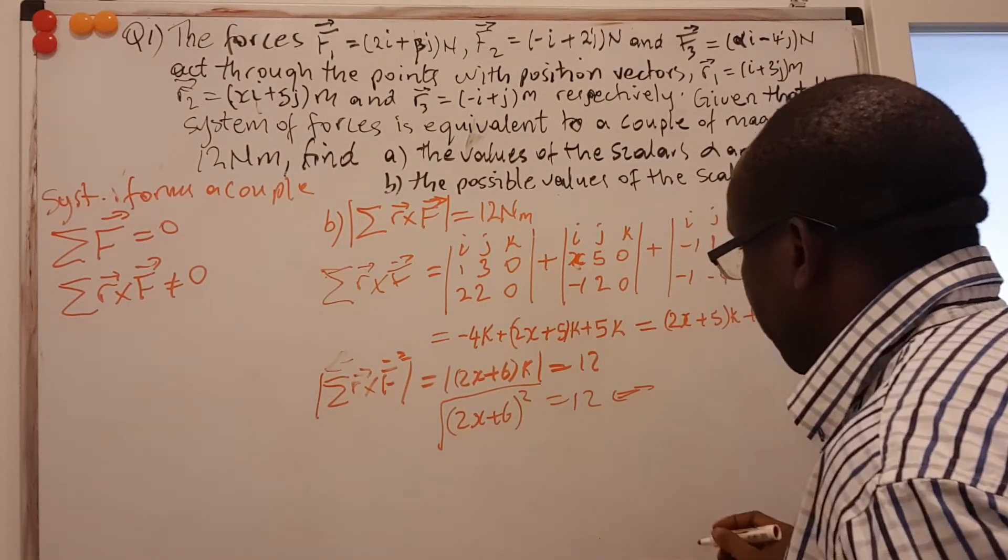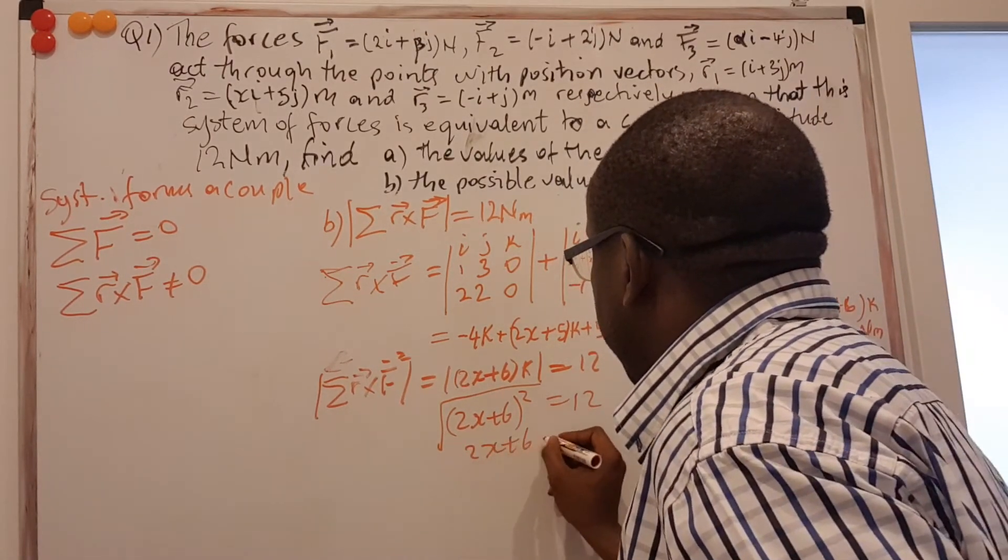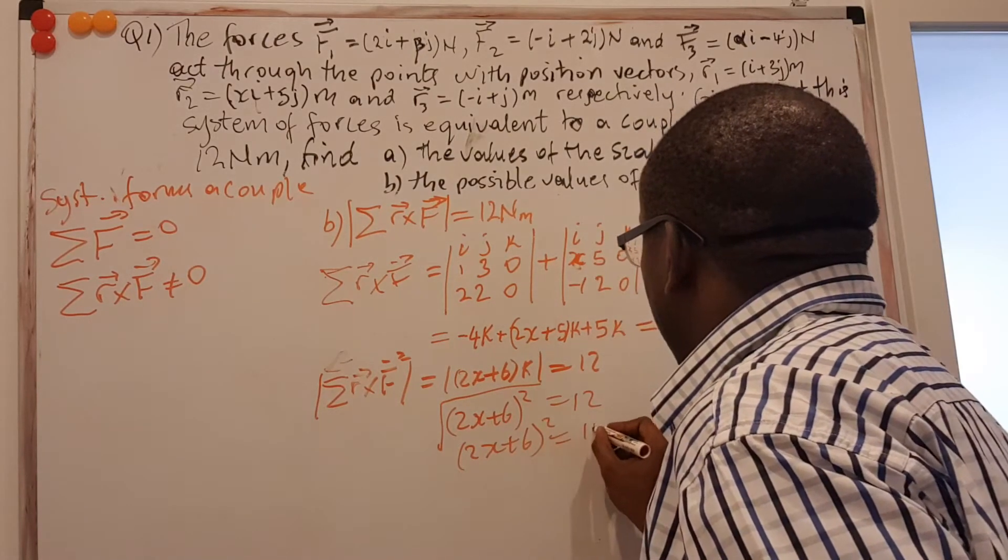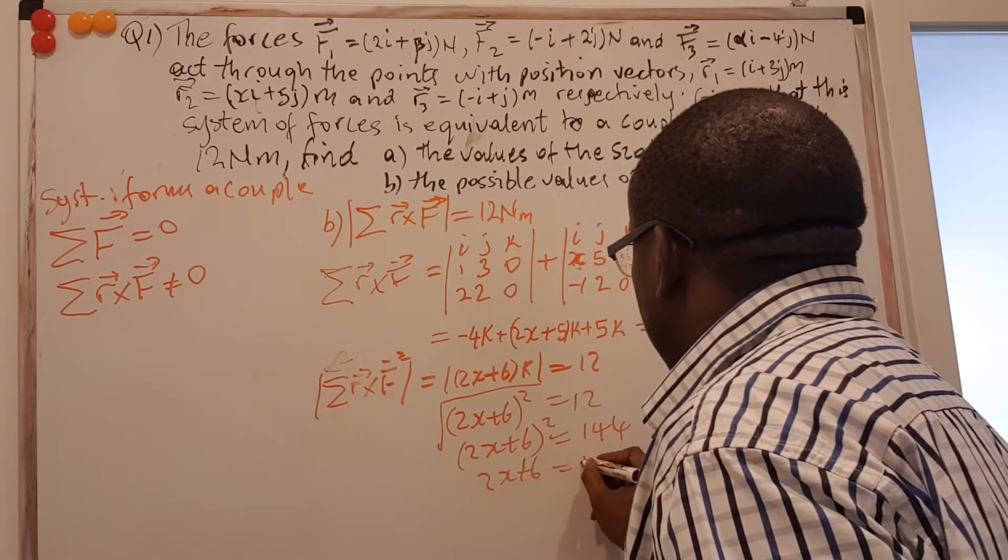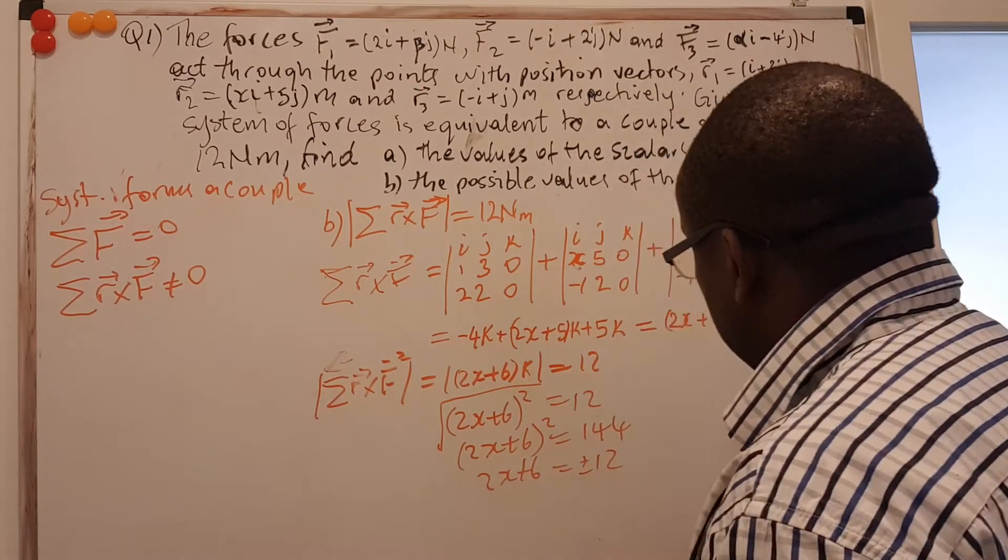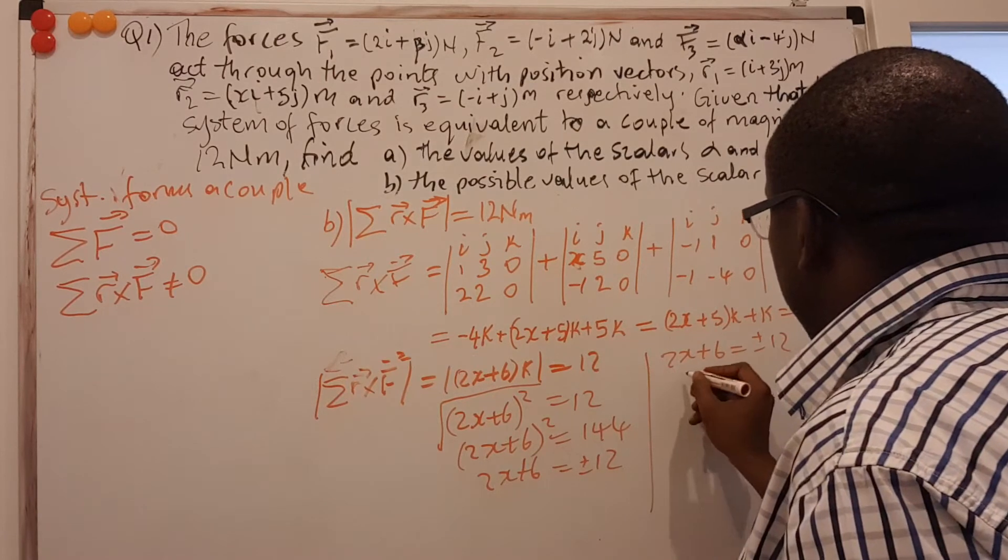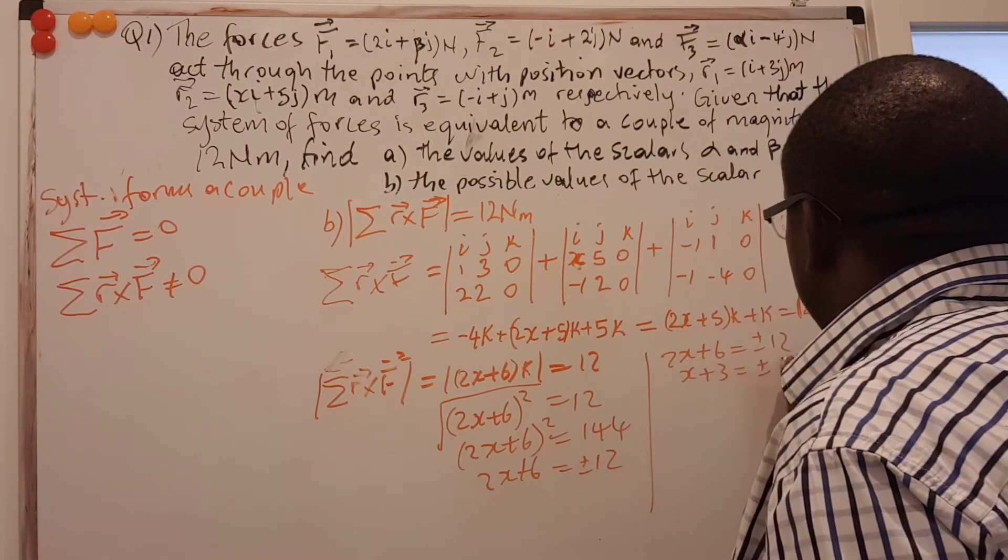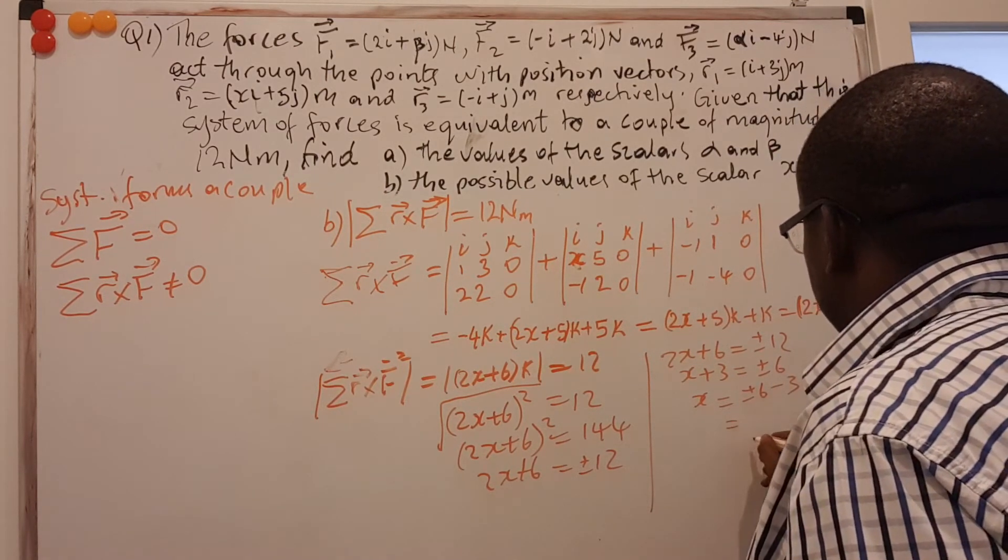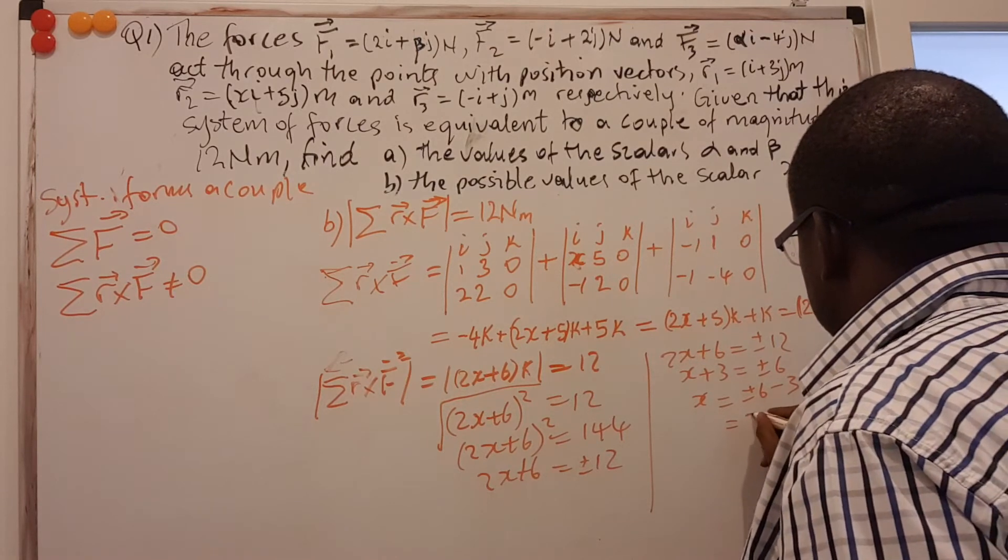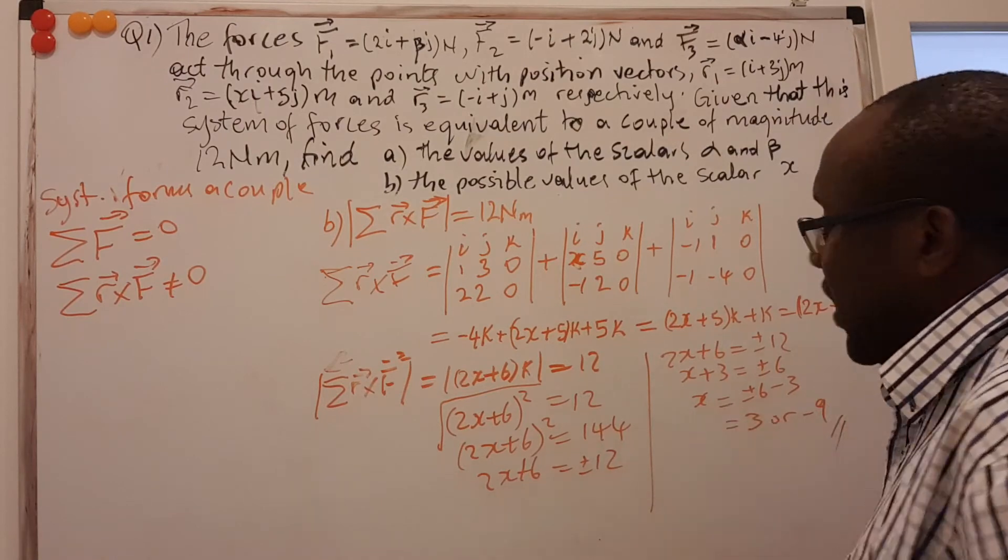If I square both sides, (2X + 6)² equals 144. If I take the square root of both sides, then 2X + 6 will be equal to plus or minus 12. If I divide all through by 2, this is X + 3 equals plus or minus 6. So my X is equal to plus or minus 6 minus 3. And this will be, plus 6 minus 3, that's plus 3. Or, minus 6 minus 3, that's minus 9. So those are the possible values of X.